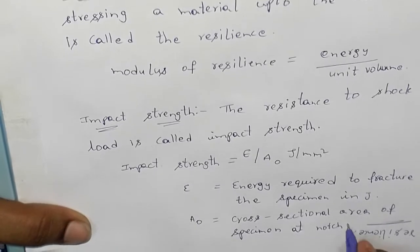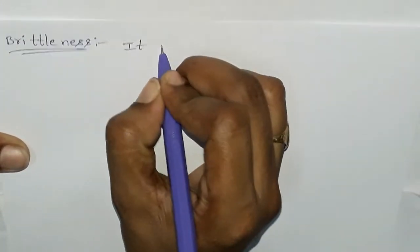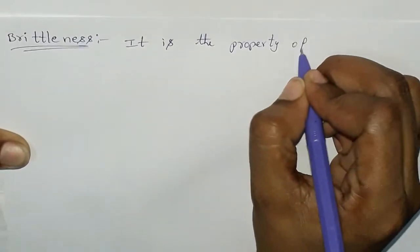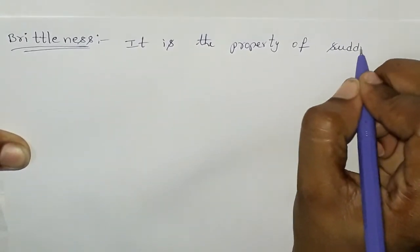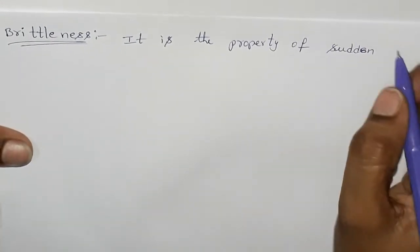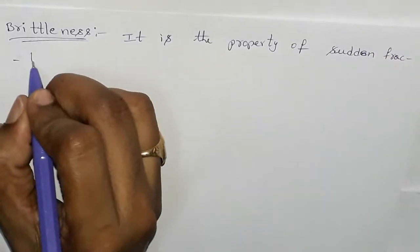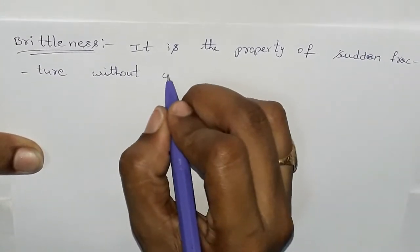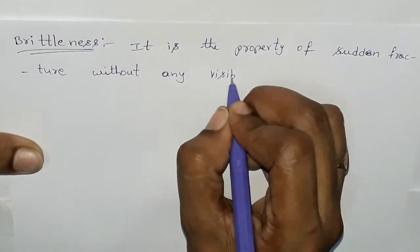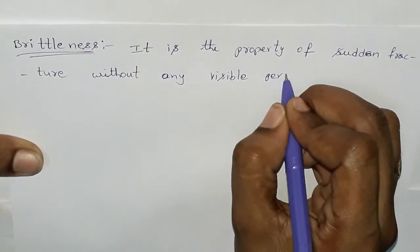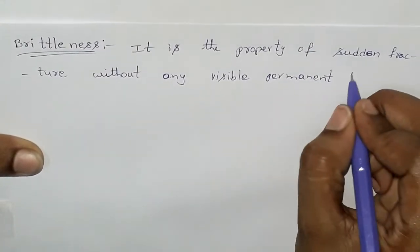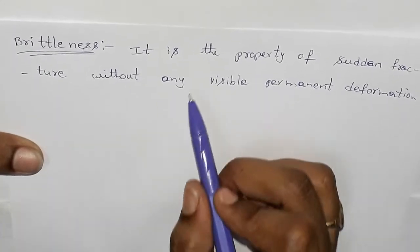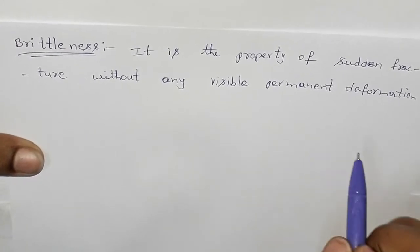Brittleness is the property of sudden fracture without any visible permanent deformation.